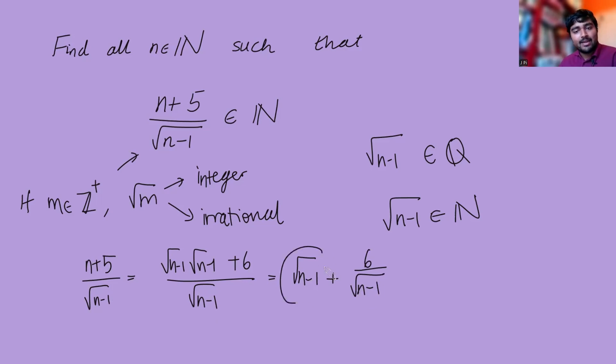So we said that root n minus 1 is an integer, so that part's fine. So in order for this to be an integer, we just require this guy here to be an integer. So in particular, root n minus 1 must be a factor of 6. Well, what are the factors of 6? Well, it's 1, 2, 3, or 6. So root n minus 1 must be 1, 2, 3, or 6.